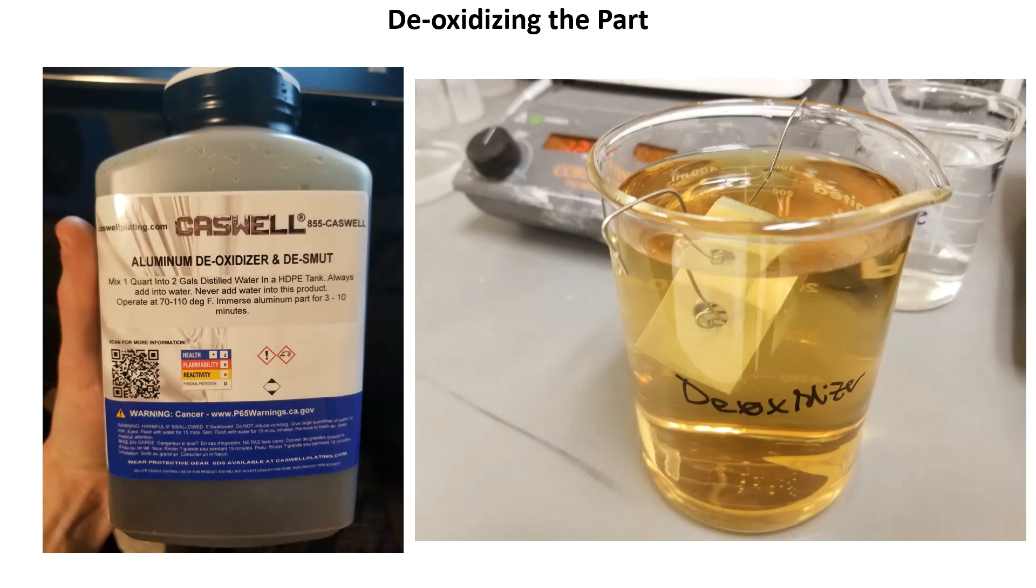After I confirmed water break free with the DI water and the part was thoroughly rinsed, I needed to deoxidize it. All oxidation needs to be stripped off of the part for the anodizing process to create a new and completely uniform oxidization layer. I used a Caswell chemical for this in a solution of 125 milliliters of chemical per liter of DI water at 45 degrees C without agitation. The part was soaked for three minutes then rinsed with DI water.